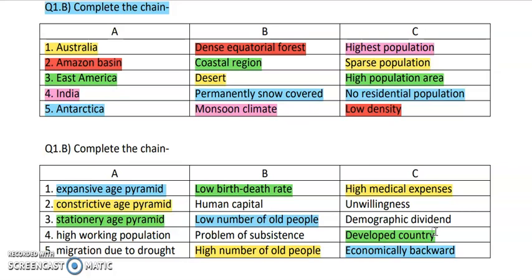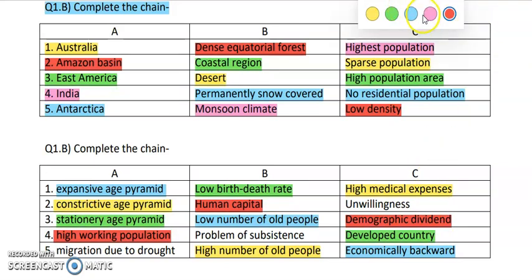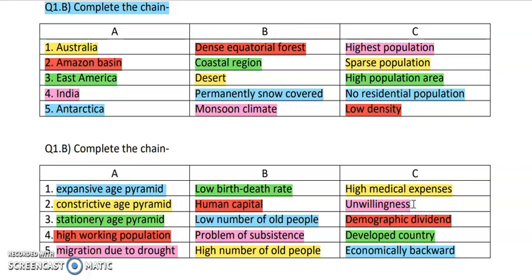Next we have high working population, which is going to give human capital and increase the demographic dividend of that country. And finally what is left is migration due to drought — if there is migration due to drought, it is a problem of subsistence, and we call it unwillingness type of migration.